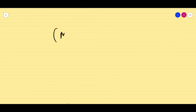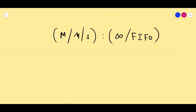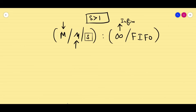Dear students, in this session we are going to see the basics on M/M/S/∞/FIFO. That means the arrival rate is Poisson, the service rate is exponential, but here the server is not a single server. It is going to be multi-server, with infinite system capacity, and the rule is always first in first out.